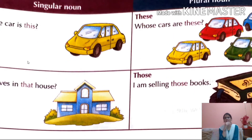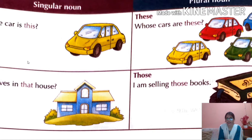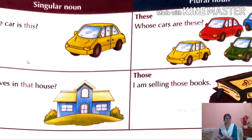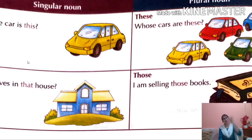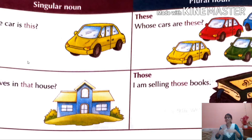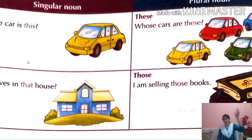Here is a chart you can screenshot or note down. Singular noun — 'Whose car is this?' — 'this' is for something singular and nearby. 'Who lives in that house?' — 'that' is for singular and distant. Plural — 'Whose cars are these?' — 'these' for plural nearby. 'I am selling those books' — 'those' for plural distant.